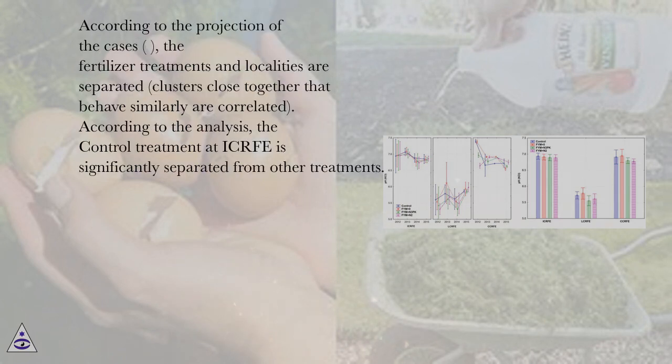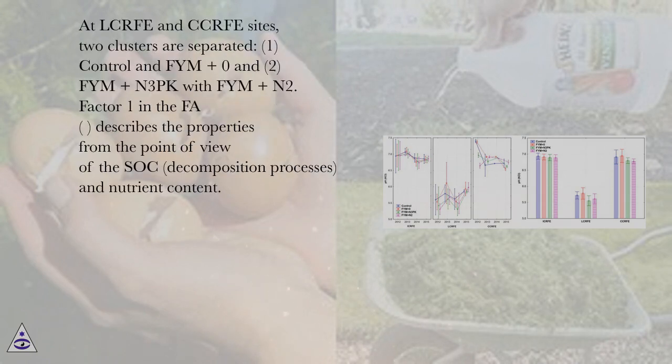According to the projection of the cases, the fertilizer treatments and localities are separated. Clusters close together that behave similarly are correlated. The control treatment at I-KERF is significantly separated from other treatments. At L-KERF and C-KERF sites, two clusters are separated: (1) control and FYM+0, and (2) FYM+N3PK with FYM+N2.